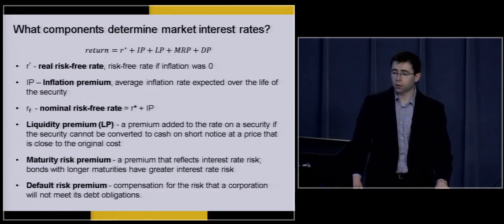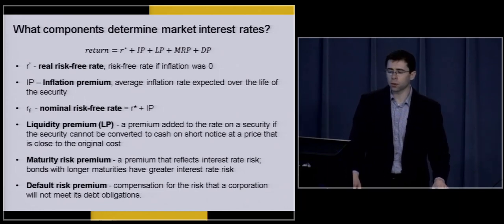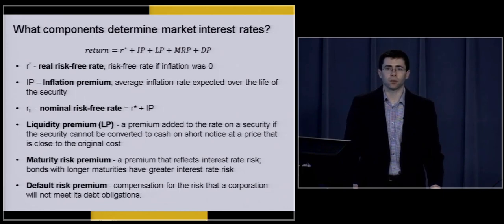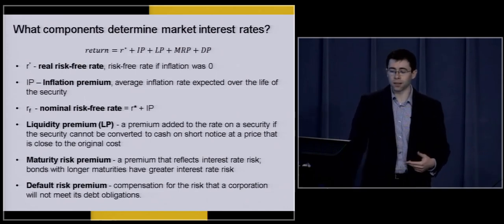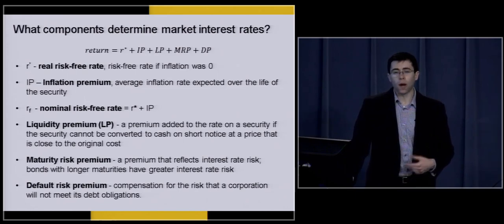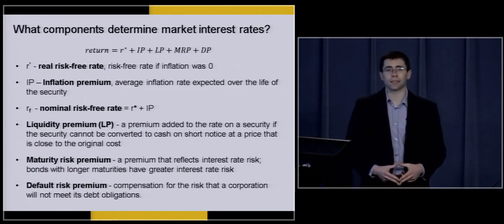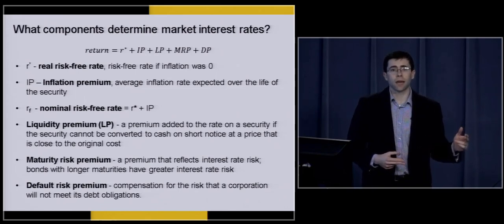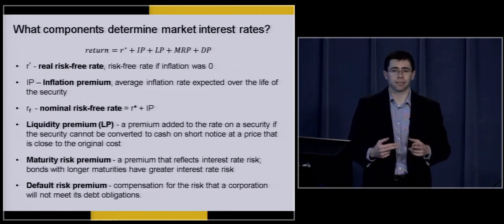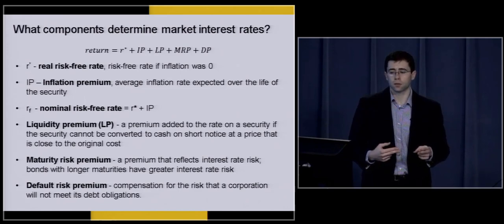The next factor to consider is the maturity risk premium. This is a premium that reflects interest rate risk — bonds with longer maturities have greater interest rate risk. If you're considering investing in two assets, one that matures in six months and another that matures in 20 years, the short-term investment is going to be affected by interest rates far less than the long-term investment. Let's say interest rates increase tremendously — the value of a bond is going to fall when interest rates rise.